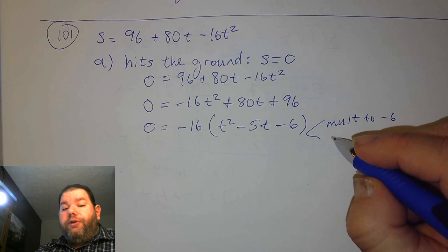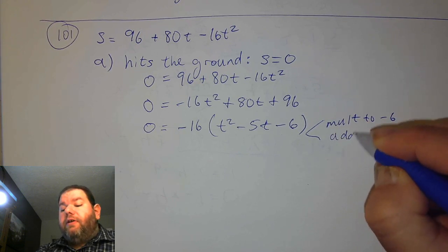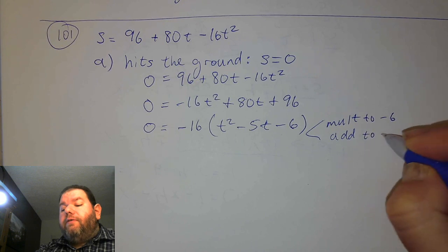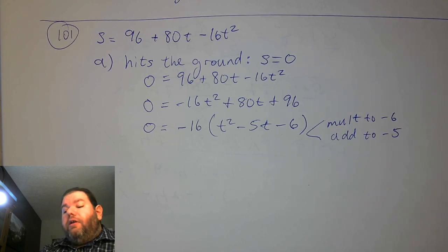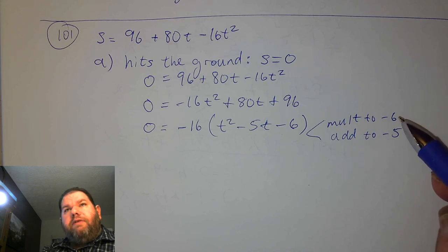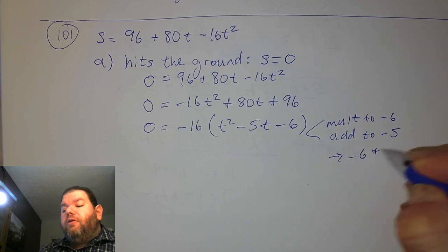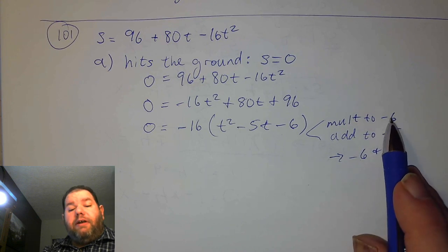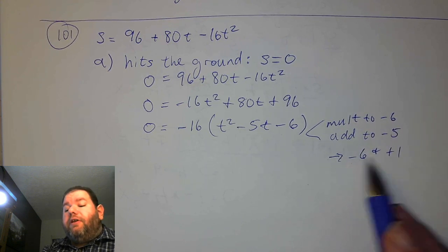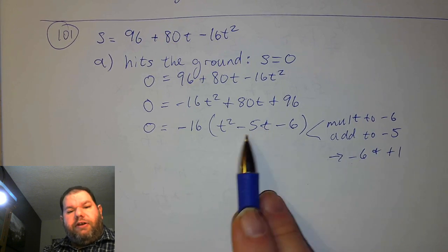Now we can factor this expression more easily once we've removed those larger numbers. We think about what combination of numbers multiplies to negative 6 and adds to negative 5. That's going to be negative 6 and positive 1: negative 6 times positive 1 is negative 6, and negative 6 plus 1 is negative 5. So it meets both criteria.